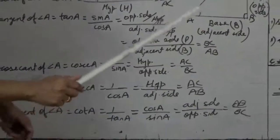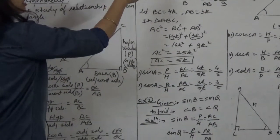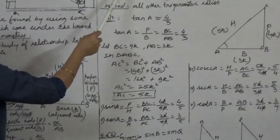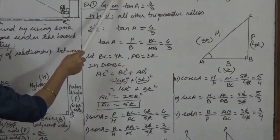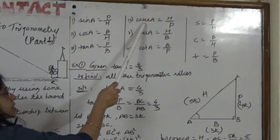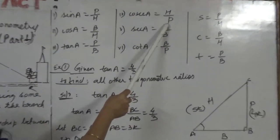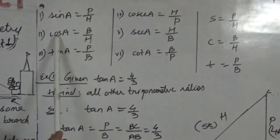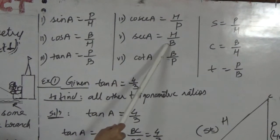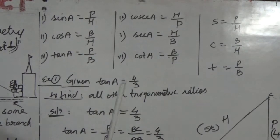In short: sin A = perpendicular upon hypotenuse; cos A = base upon hypotenuse; tan A = perpendicular upon base. Their reciprocals: cosec A = 1 upon sin = hypotenuse upon perpendicular; sec A = 1 upon cos = hypotenuse upon base; cot A = 1 upon tan = base upon perpendicular.